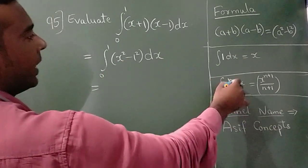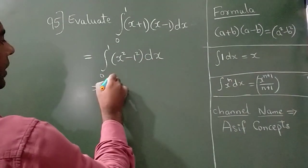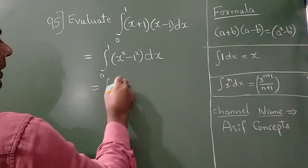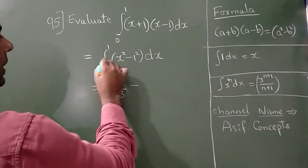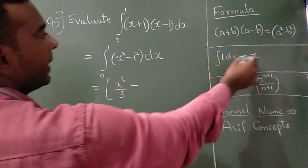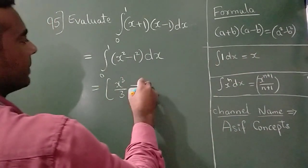Applying the formula — n value is 2 here — so I can write x³/3 minus the integration of 1, which is x.